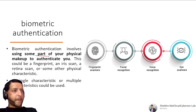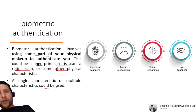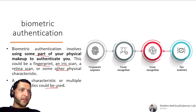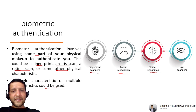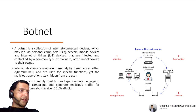Biometric Authentication involves using some part of your physical makeup to authenticate you — fingerprint, iris scan, retina scan, or other physical characteristics. Single or multiple characteristics can be used. In MFA, multiple factors are combined. Examples include fingerprint scanners, facial recognition, voice recognition, and eye scanners. It is difficult to duplicate, though attackers do attempt it.